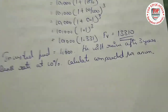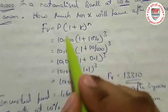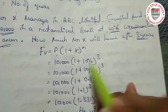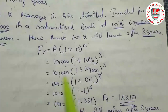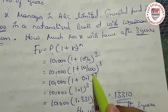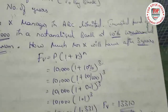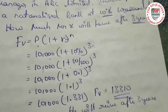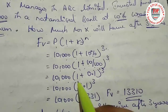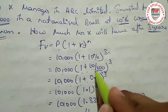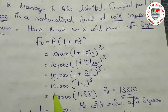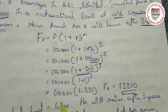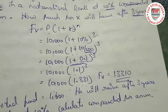Simple — don't overthink. P is 10,000. Keep 1 as it is. R is 10 percent. N is 3 years. So we have 10,000 into (1 + 10 divided by 100) to the power 3. We convert 10 percent to 10/100, which gives 0.1. So it becomes 10,000 into (1 + 0.1)^3, which is 10,000 into 1.1^3.